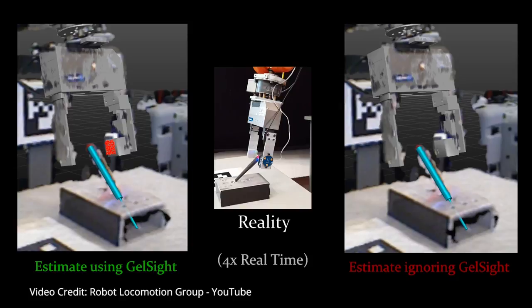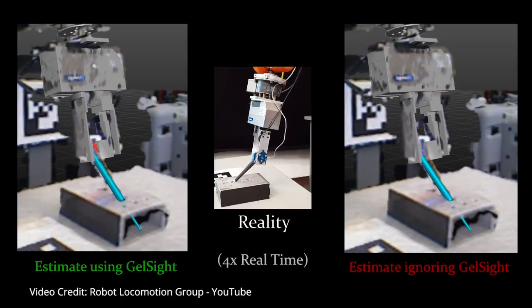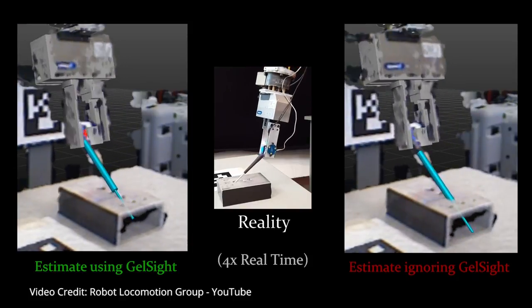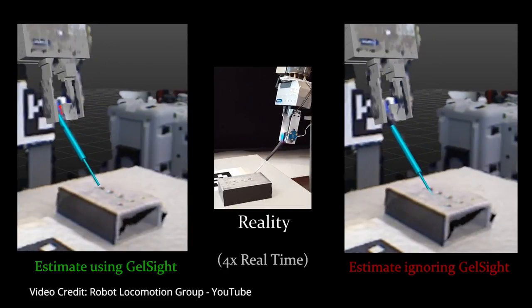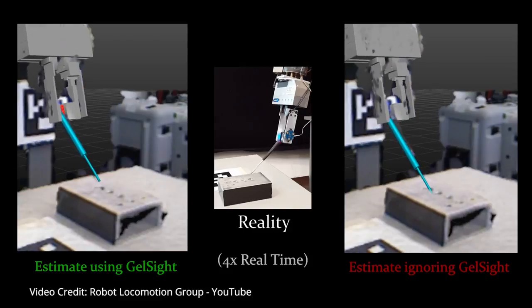They found that as long as the vision system estimate of the screwdriver's initial estimate was accurate to within a few centimeters, the algorithms could deduce which part of the screwdriver the sensor was touching and thus determine the position of the screwdriver in the robot's hand.